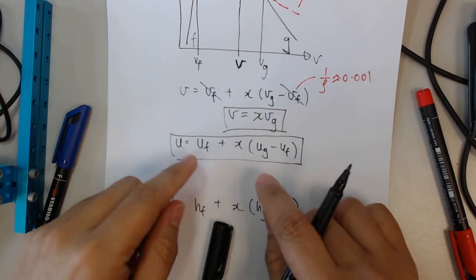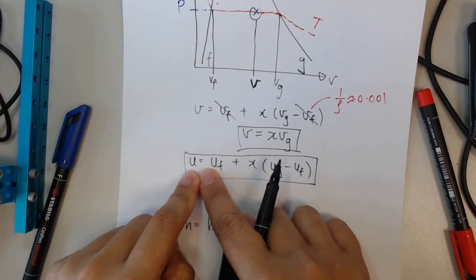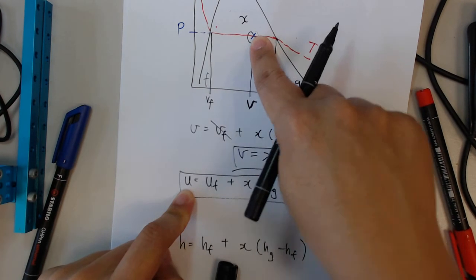Okay, so you just go to the steam tables, you find Uf and you find Ug, you chuck them in, and you will be able to find the specific internal energy at this point of your interest.